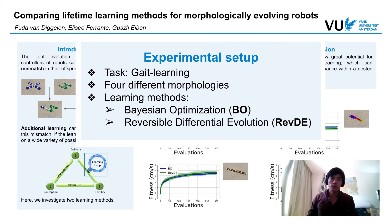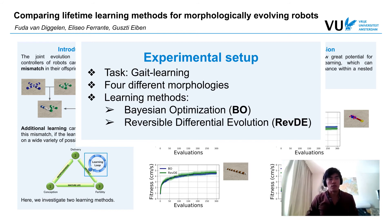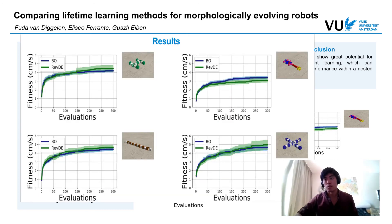The choice for these two was mainly that Bayesian optimization is a very well-known efficient learner and would serve as a good benchmark for the more interesting evolutionary algorithm, which ties in neatly for future work in a nested evolutionary loop like lifetime learning.